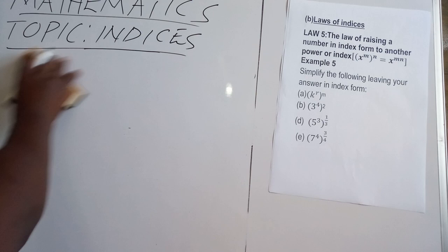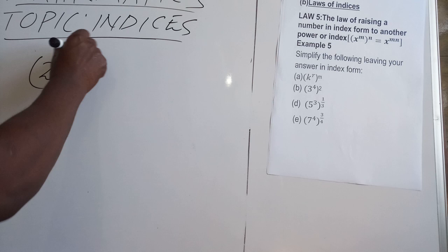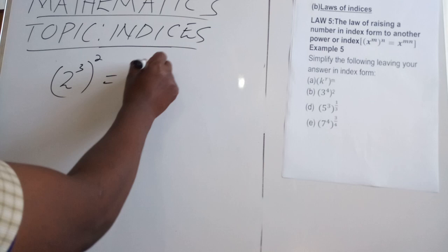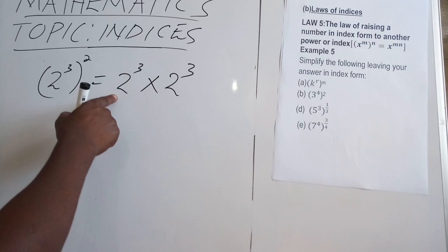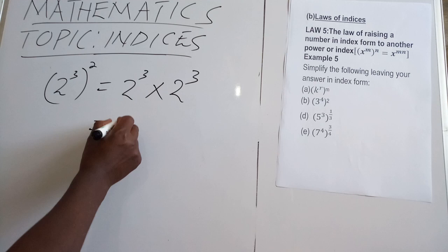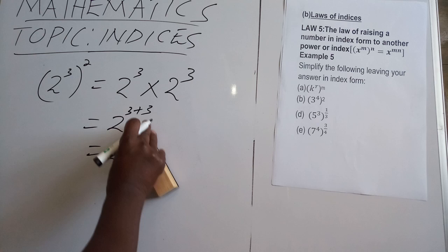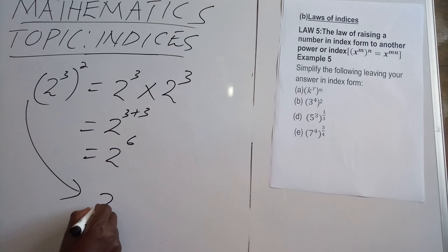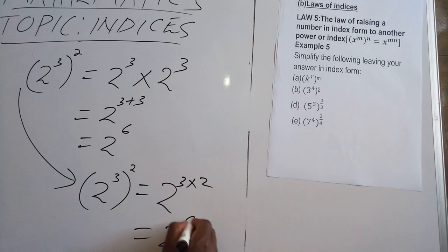I will give an illustration — example 5. A simple illustration: I have 2 raised to power 3, squared. Whenever you square a number, it means you multiply that number by itself twice. Now, applying the law of multiplication having similar bases, we shall have 2 power 3 plus 3, to give us 2 power 6. The same outcome can be achieved by simply doing this: you take 2 power 3 times 2, and you get 2 power 6.